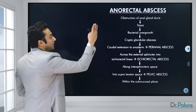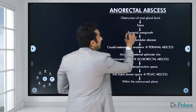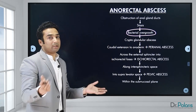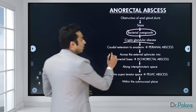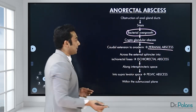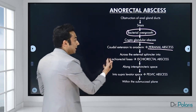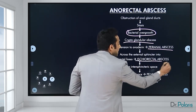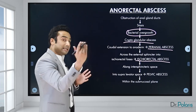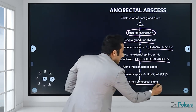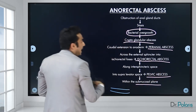There is obstruction of the anal glands, stasis of the collection, and because of the stasis there is bacterial overgrowth, leading to the formation of a cryptoglandular abscess. This abscess can track in different directions: to the skin (perianal abscess), across the external sphincter into the ischiorectal fossa (ischiorectal abscess), in the intersphincteric space, just deep to the submucosa (submucosal abscess), or upwards into the pelvis (pelvic abscess).